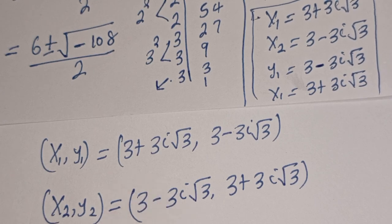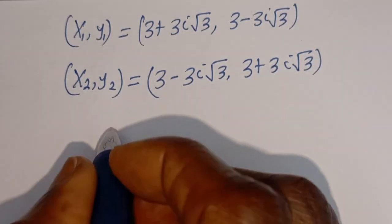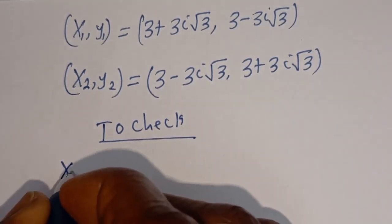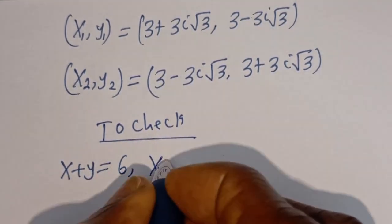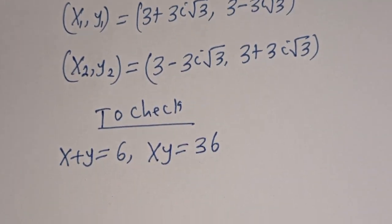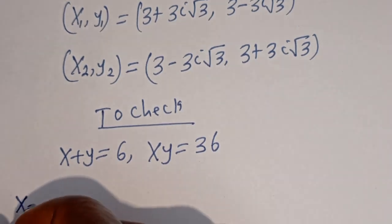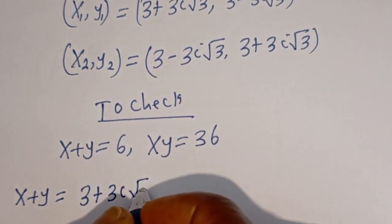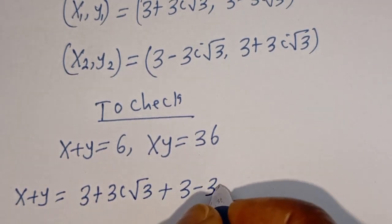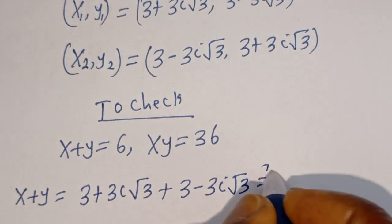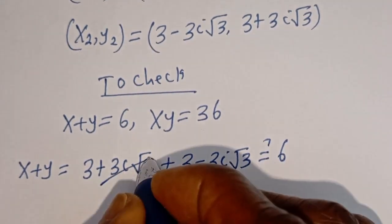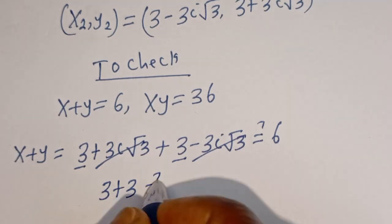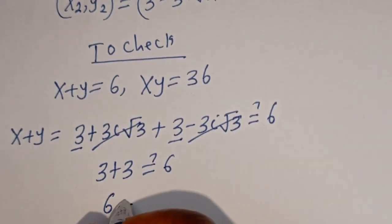We can check to confirm if this answer is right or wrong. Let's check. To check, we have the given equation s plus y equal to 6, and s times y equal to 36. Now let's use the first equation: s plus y equals 3 plus 3i root 3 plus 3 minus 3i root 3. The imaginary parts cancel, and we have 3 plus 3 which is 6, equal to 6, which is true.